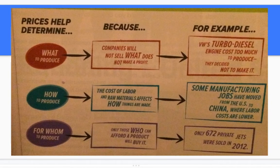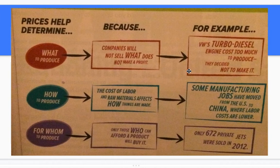Prices help determine a few things — this chart is in your book. First, what to produce: companies will not sell what does not make a profit. An example is Volkswagen's turbo diesel engine — it cost too much to produce, so they decided not to make it. Even though the turbo diesel engine was extremely popular, the cost was too high and profit was not readily available, so they cut it.